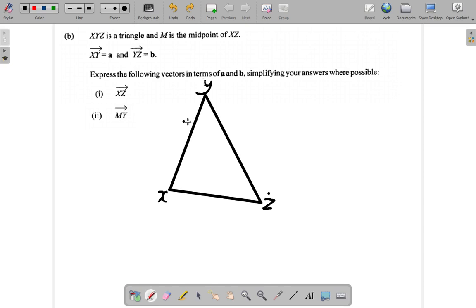XY is A, so let's put an arrow on it and call it A. That's vector XY. Vector YZ is B. This is B. Good.